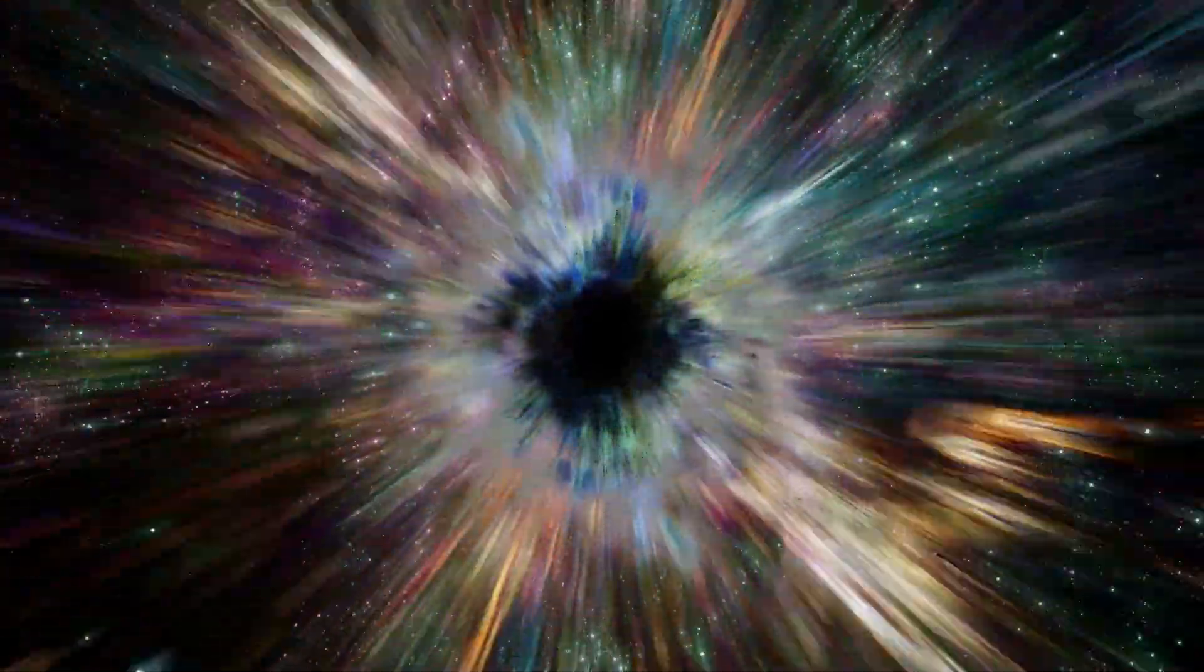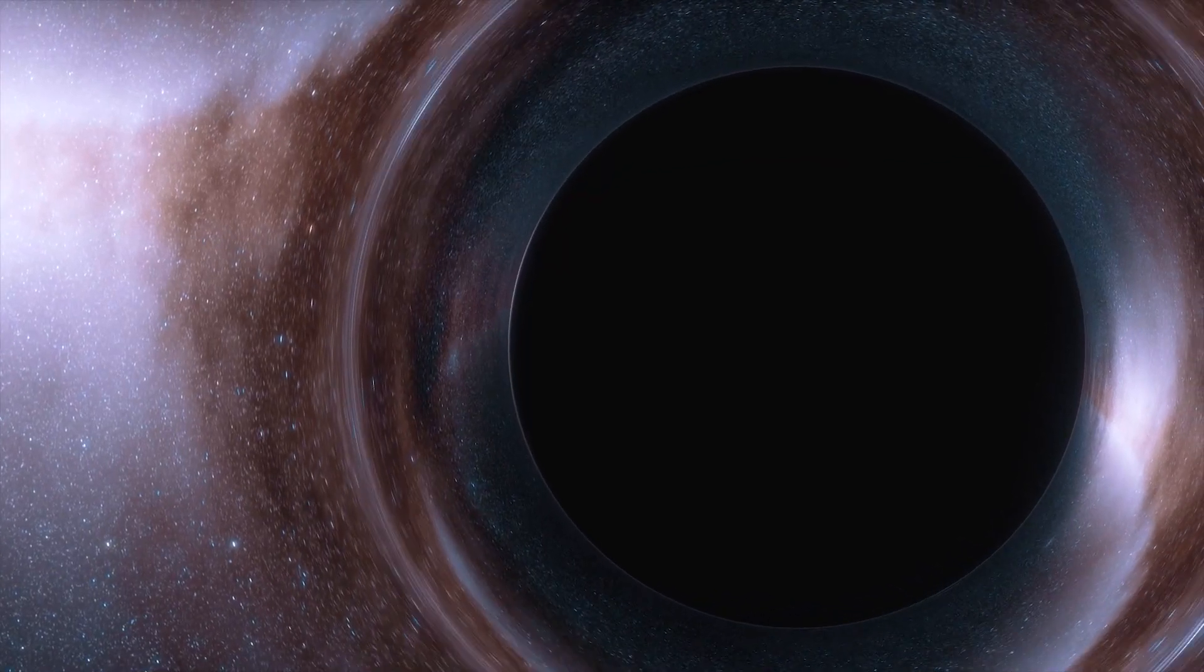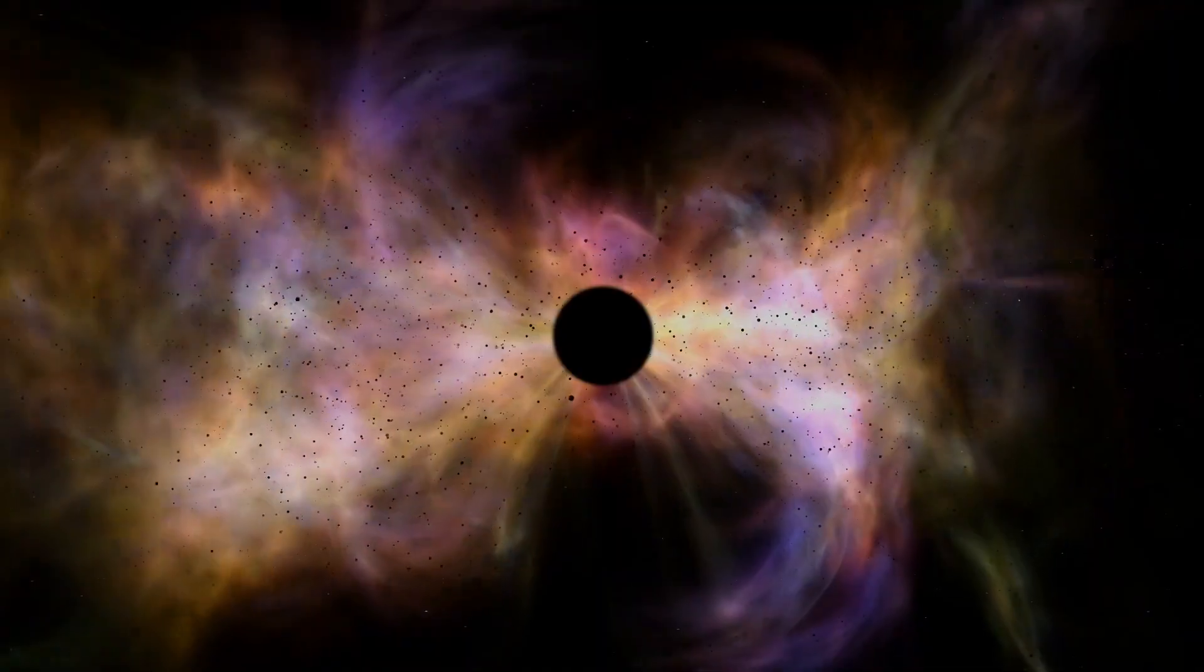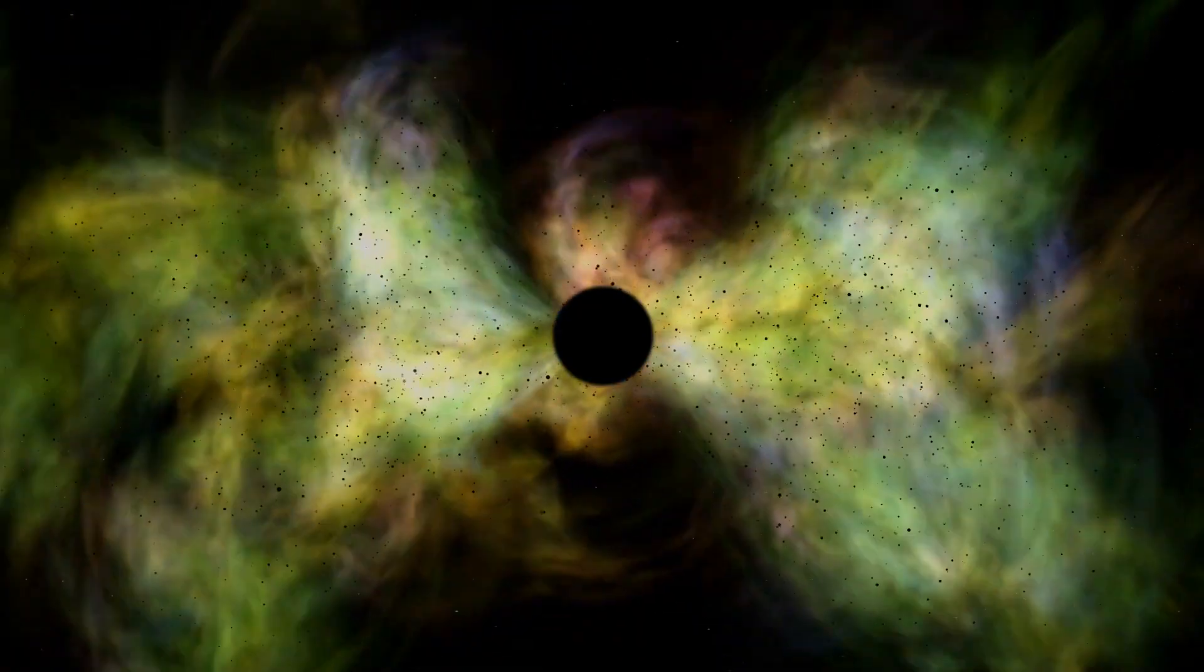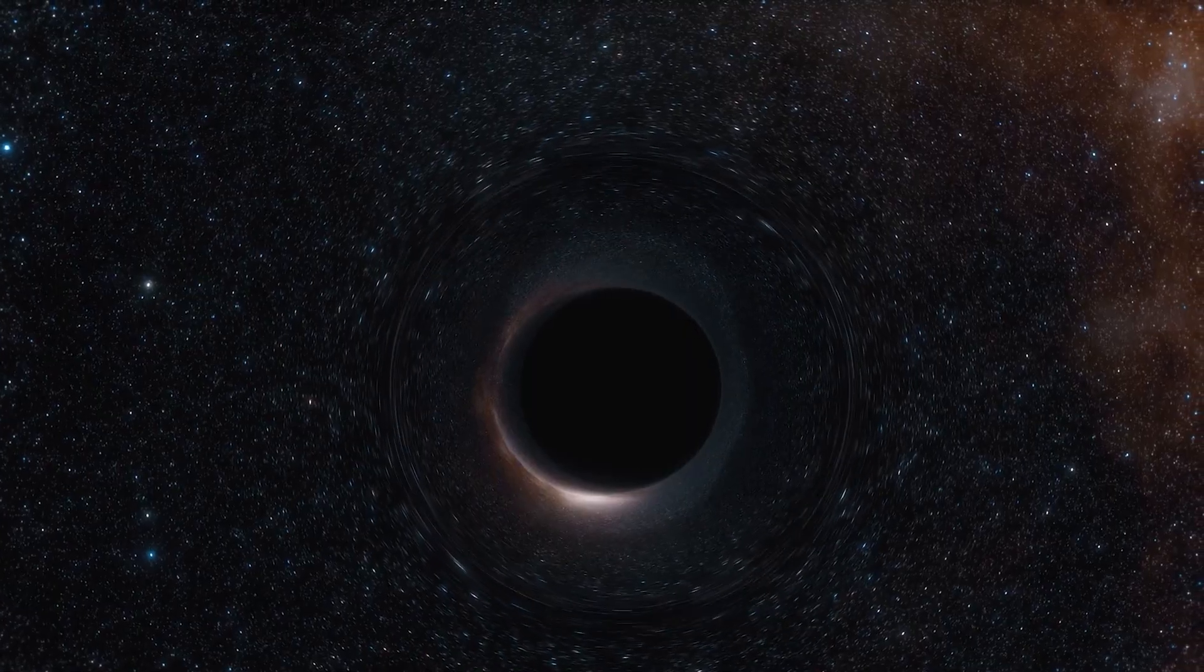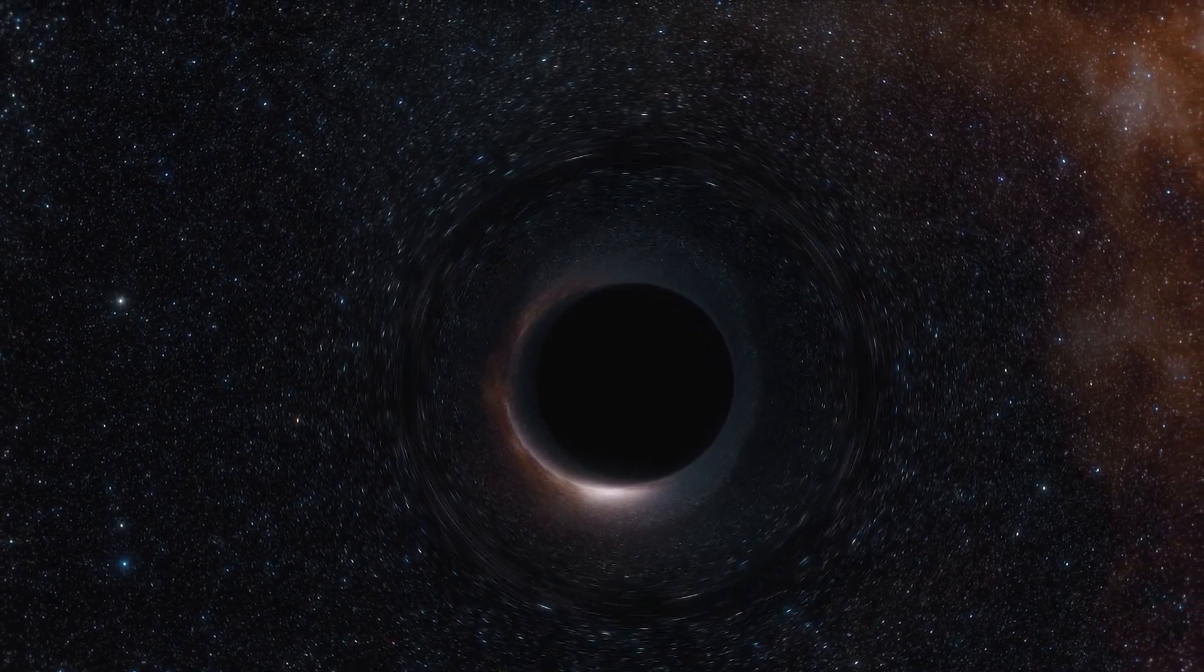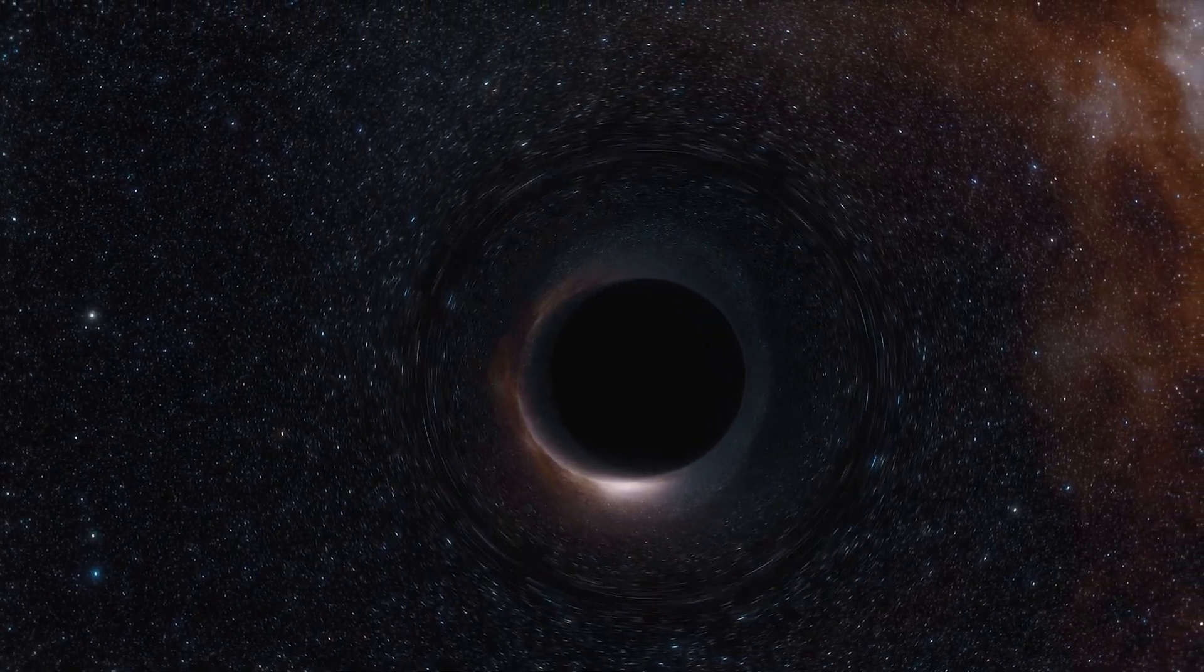Number 2: A rogue supermassive black hole is hurtling through space at around 5 million miles per hour. A black hole is found in every galaxy, but this one has been ejected out of its home galaxy, 3C 186. This is most likely the result of two galaxies colliding. Astronomers believe it will break free from its galaxy and traverse the universe in 20 million years.